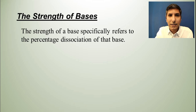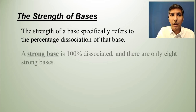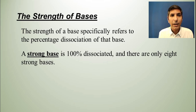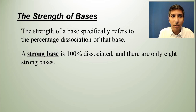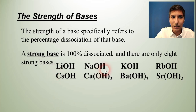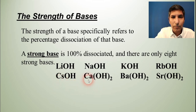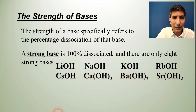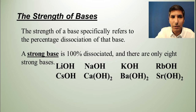The strength of a base specifically refers to the percentage dissociation of the base, and a strong base, just like a strong acid, is 100% dissociated. There are only eight strong bases you need to know in AP chemistry — essentially the group one and two hydroxides: lithium hydroxide, sodium hydroxide, potassium hydroxide, rubidium hydroxide, cesium hydroxide, calcium hydroxide, barium hydroxide, and strontium hydroxide. The lighter ones like beryllium and magnesium hydroxide aren't that soluble, so they don't dissociate anyway.